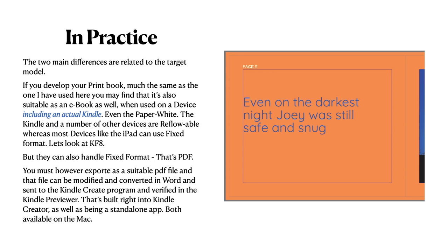Kindle has a KF8 format, and that's a fixed format. You must export as a suitable PDF file the book that you want to put on the Kindle in fixed format. It can be modified and converted in Word and sent to the Kindle Create program, and verified in the Kindle Previewer. Or you can send a PDF directly to the Kindle, and I'll show you that in a separate video shortly.